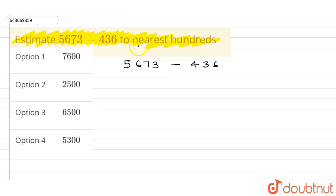For nearest hundred, I have to check ones and tens digit. Here, the ones digit is 3 and tens digit is 7, so that is 73. This value is more than 50, so I have to replace it by zero and add one here, so this will become 5700.